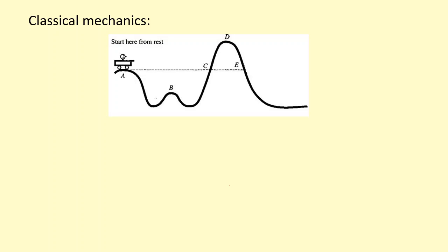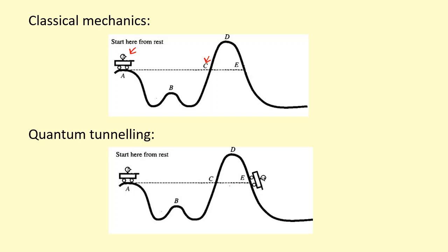In classical mechanics, when this person in this cart leaves point A with zero kinetic energy, the maximum they'll reach is point C. There's nowhere they'll reach D or E. However, in quantum mechanics, this isn't the case.